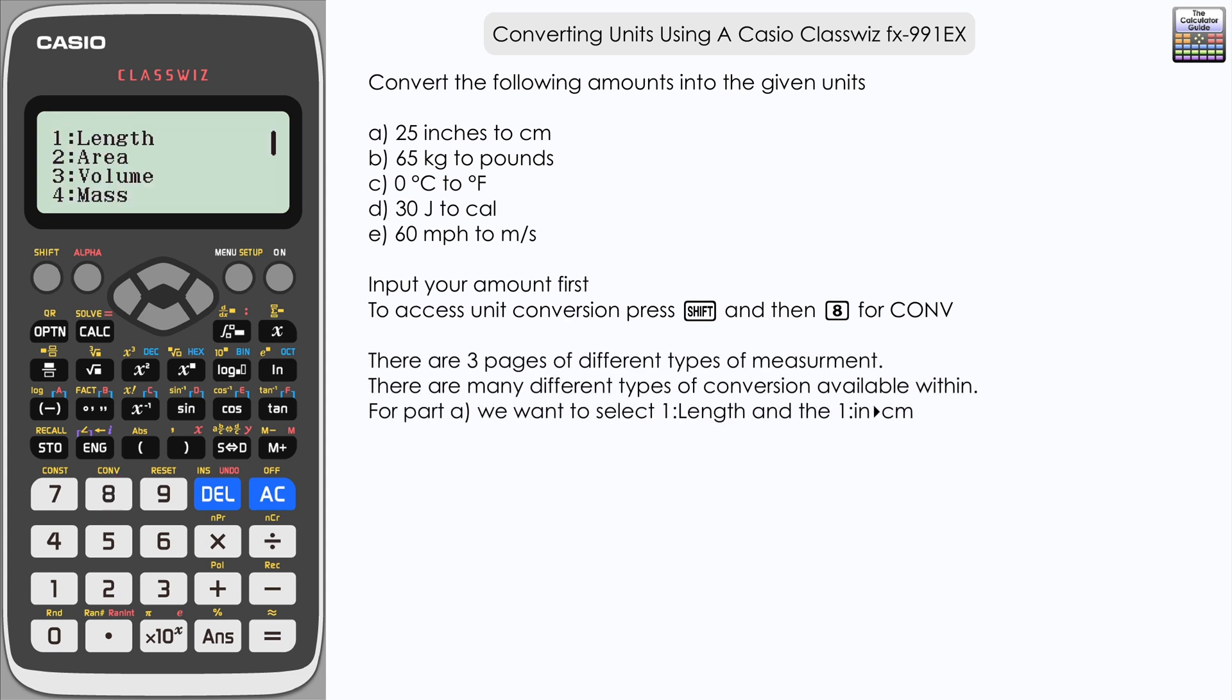Now you can see here that we've got the start of the menu. We've got different types of measurement here and there is more if we scroll down. But we're going to start with option 1 which is length, and you can see that there are many different conversions that we can do there, specifically a lot of metric to imperial measurement conversions which is quite useful. Obviously feel free to have a look around if you've got different types of conversion you want to know what's available from the calculator.